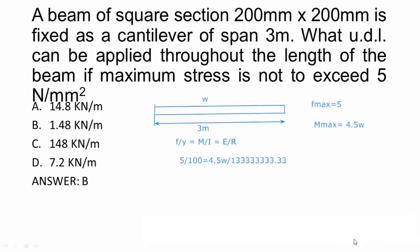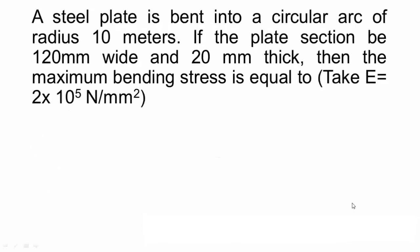Let us go to next question. A steel plate is bent into a circular arc of radius 10 meter. If the plate section be 120 mm wide and 20 mm thick, then the maximum bending stress is equal to. Again, maximum bending stress has been asked. 100 Newton per mm square, 150 Newton per mm square, 200 Newton per mm square and 300 Newton per mm square. So cross sectional area is 120 by 20, E value is 2 into 10 raise to 5, what is asked is maximum bending stress.